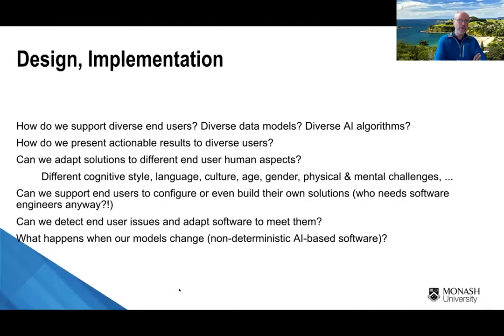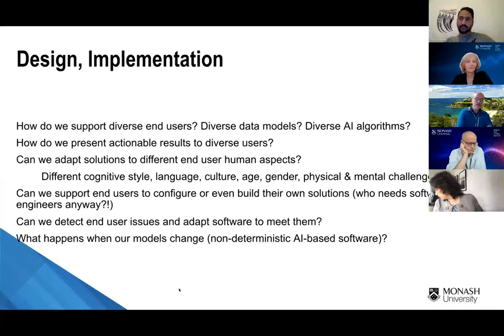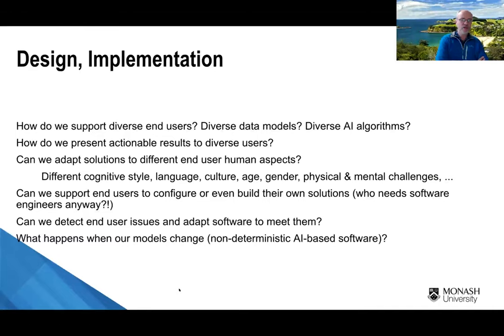What happens if our models change? I've just had a PhD at Deakin finish — a very interesting project studying cloud-based computer vision services and how they change over time. Exactly the same inputs to the computer vision service give you totally different outputs — different probabilities, classifications, identification of elements, and so on. These non-deterministic things are something most software engineers don't understand and aren't trained much in. When they're using AI-based or natural language processing services, they look like standard services because you call them the same way from the code, but they're totally different behind the scenes.